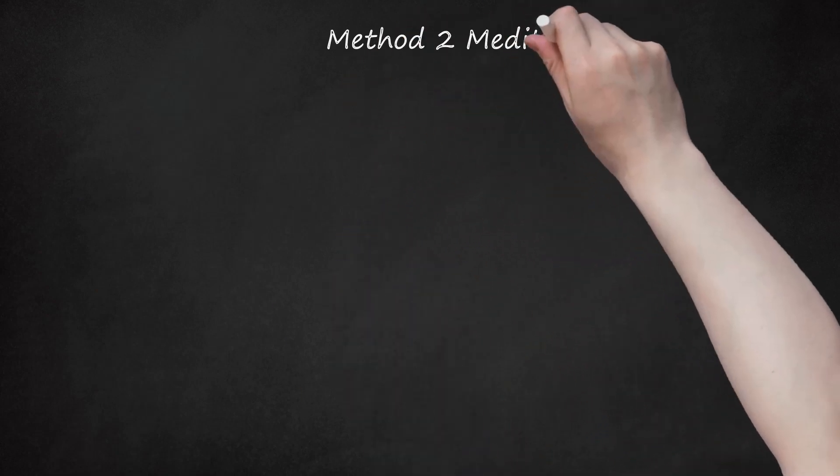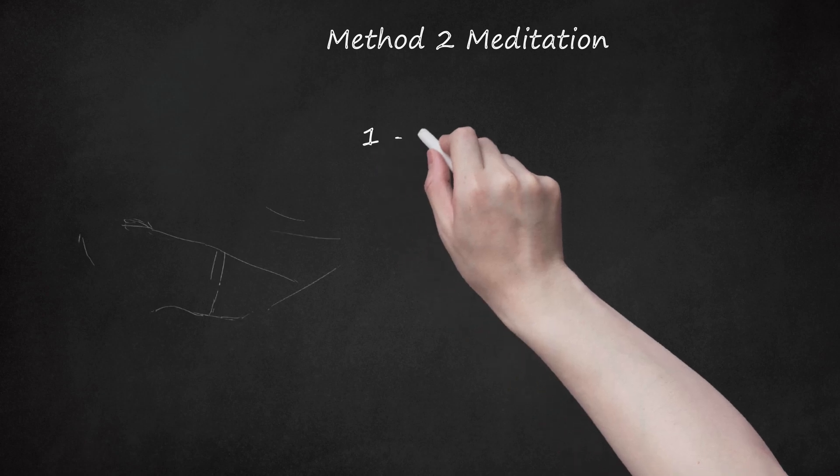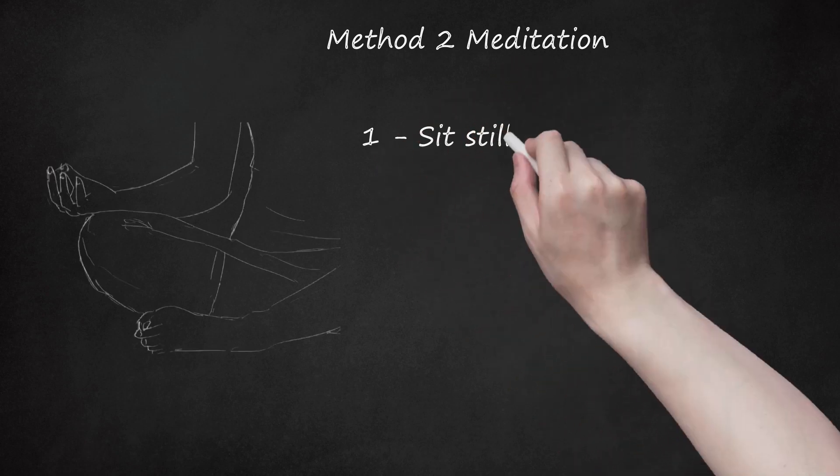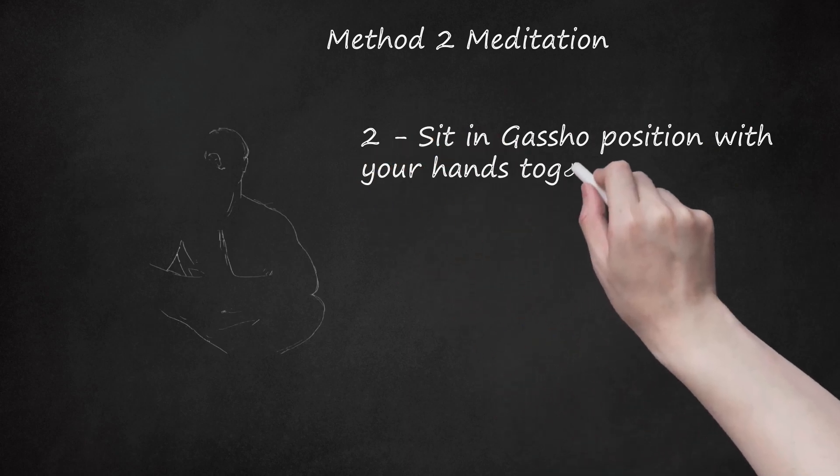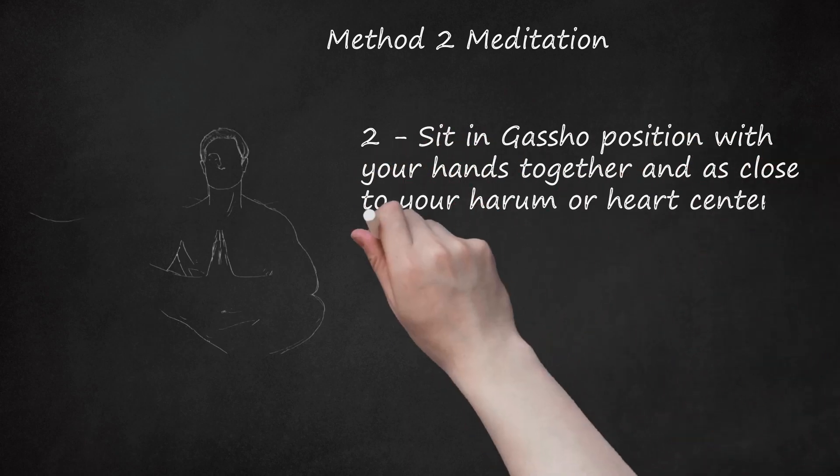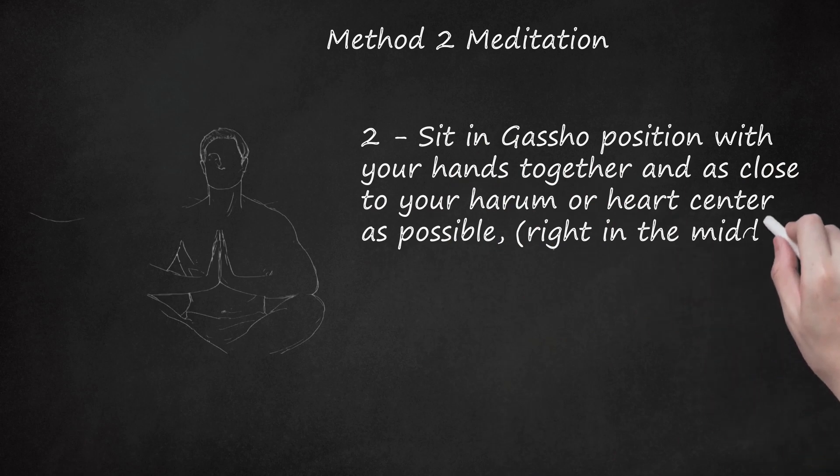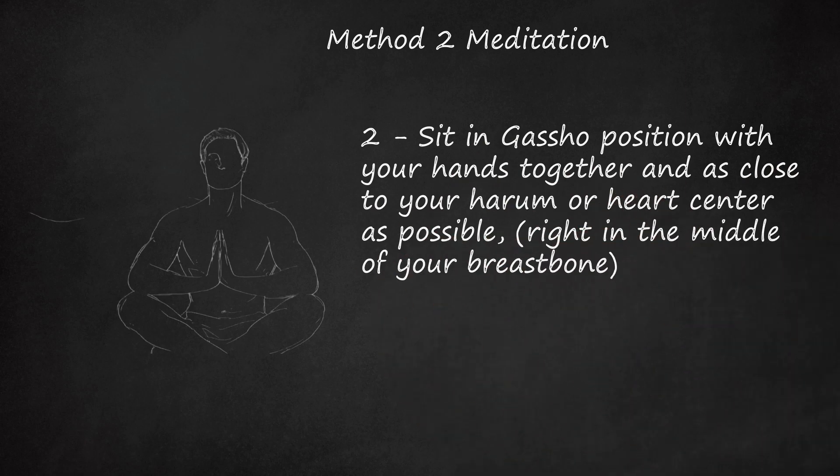Method 2: Meditation. 1. Sit still. 2. Sit in Gassho position with your hands together and as close to your hara or heart center as possible, right in the middle of your breastbone. Relax your shoulders and your arms, do not tense or over-try.